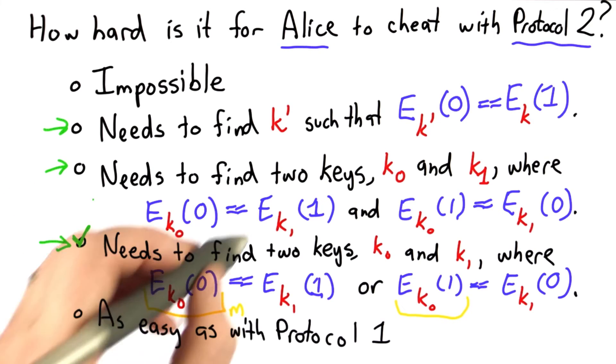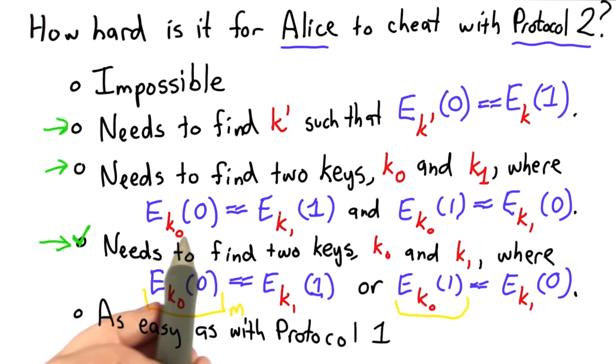The second one would also be enough, but this is a much stronger property to find a key pair that has both of those properties.